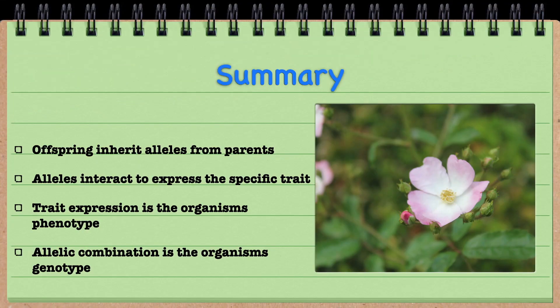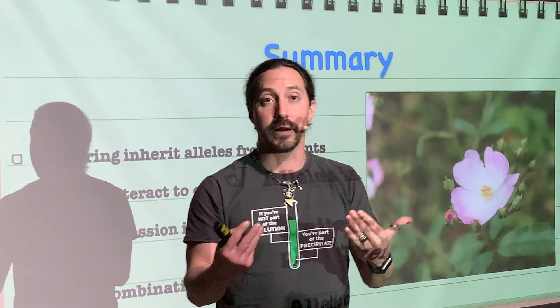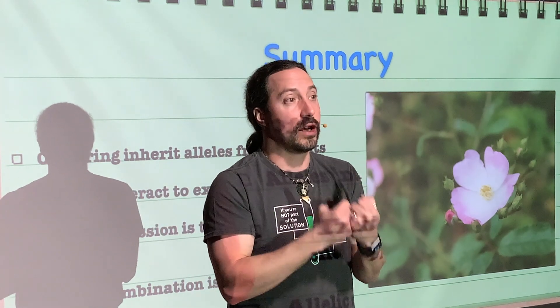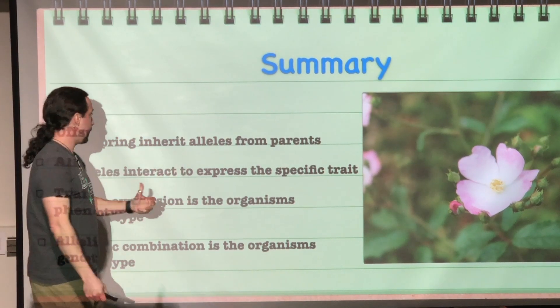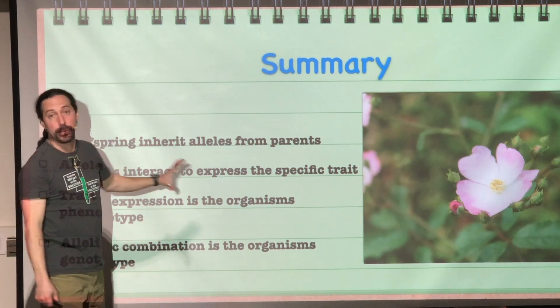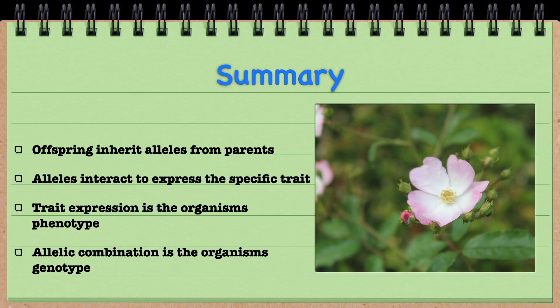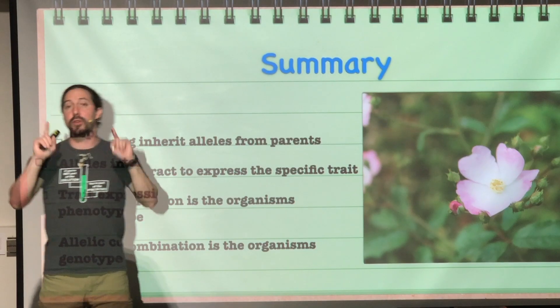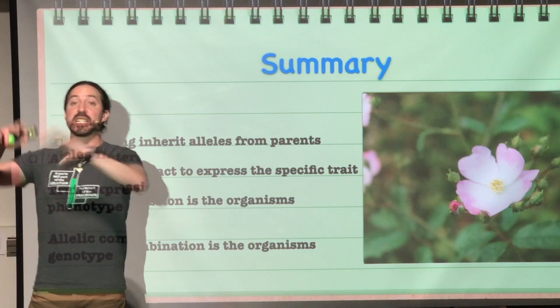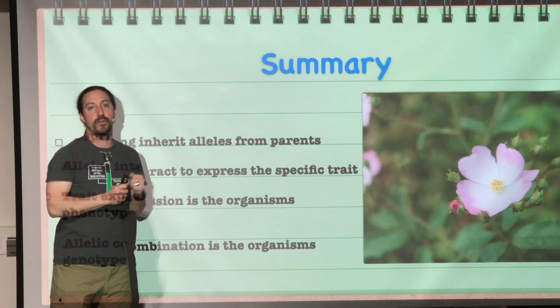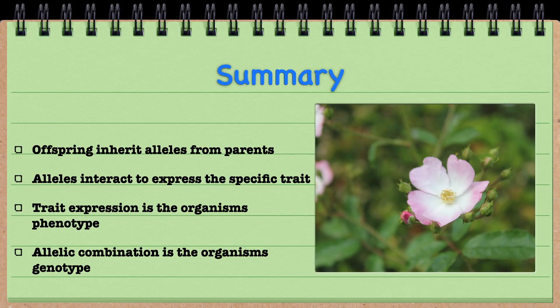In summary, all offspring inherit their alleles from their parents. That's the key. Those alleles are going to interact with each other—the allele on one homologous pair and the allele on the other homologous pair interact in a specific way. The way those alleles interact determines what trait is expressed. That expression of a trait is the phenotype of an organism, and the actual alleles the organism has is its genotype.